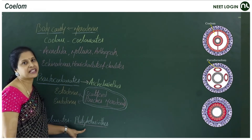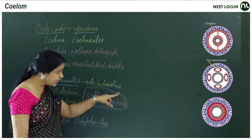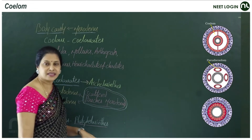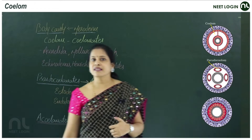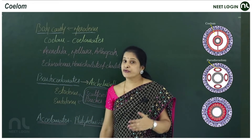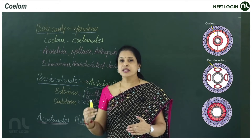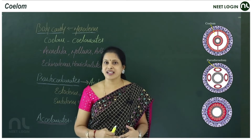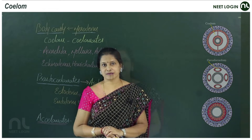The example for acoelomates is Platyhelminthes. Platyhelminthes members are acoelomates. Aschelminthes are the pseudocoelomates. And from Annelida to the members of Chordata, they are the true coelomates.